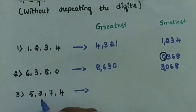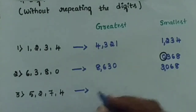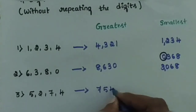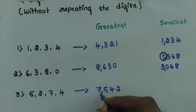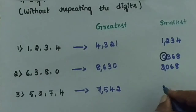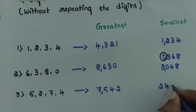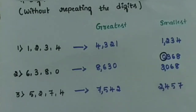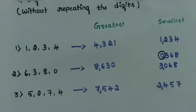Write the greatest number using digits 5, 2, 7, 4: the greatest is 7,542. The smallest number is 2,457.